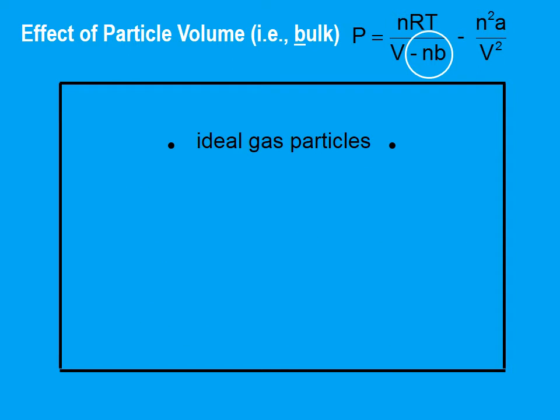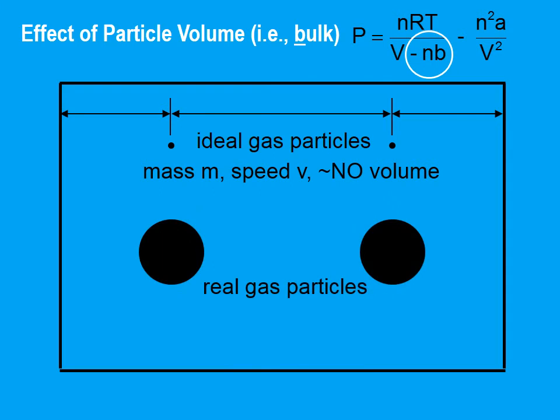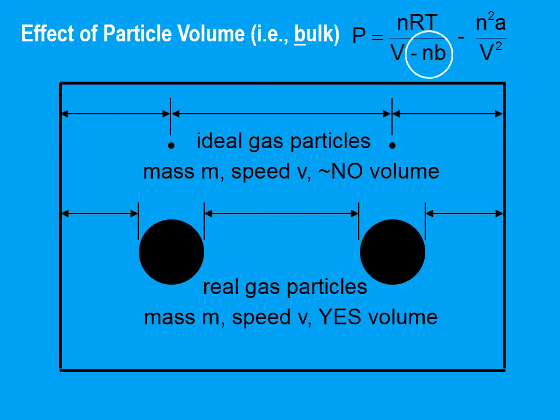Let's tackle the other new term. If we have ideal gas particles, these you can see are very tiny. They have a certain mass, they have a certain speed, but they have essentially no volume. In order to collide with sides of the container, or with each other, they have to travel a certain distance. Because real gas particles do have a noticeable volume. So I've drawn them much bigger. For these two to either collide with each other, or collide with the walls, do you see that these real gas particles, they don't have to travel as far before they bump into each other, and they don't have to travel quite as far when they bang into the walls of the container.